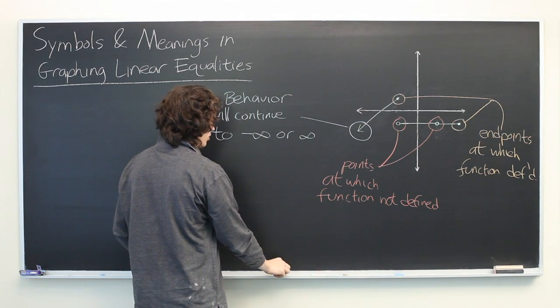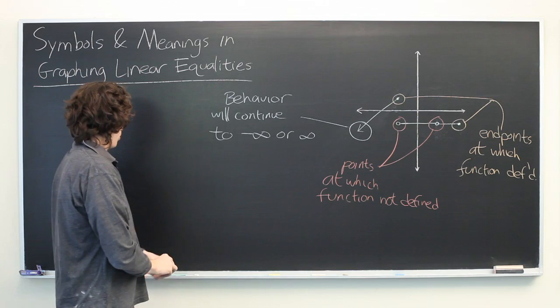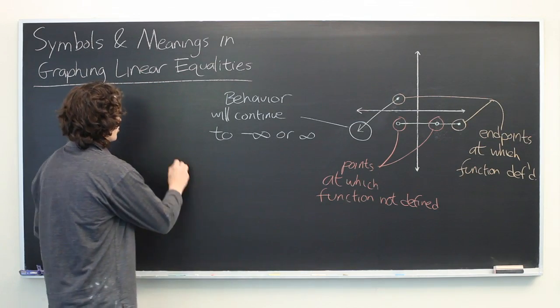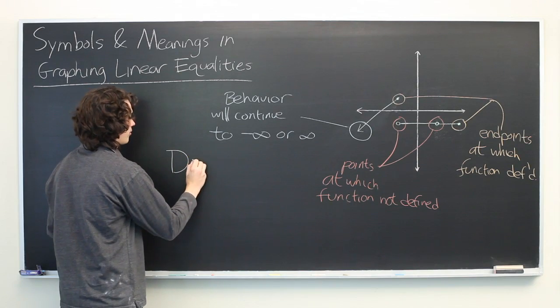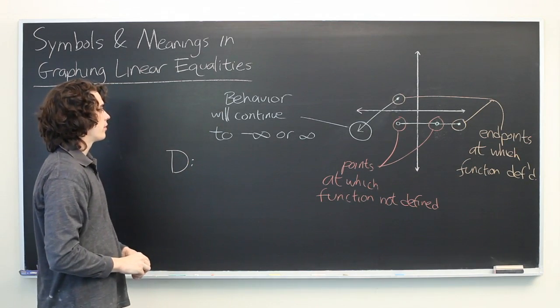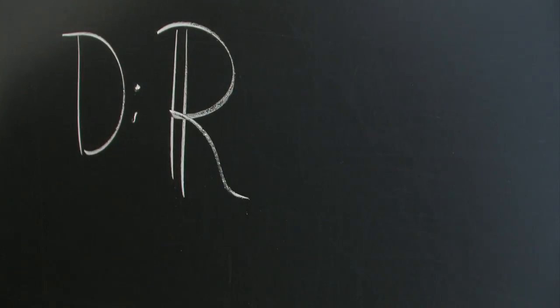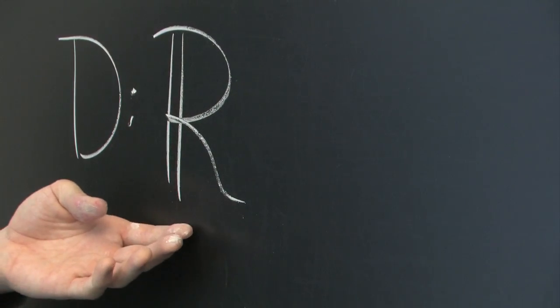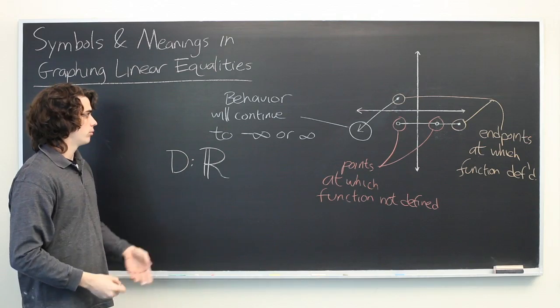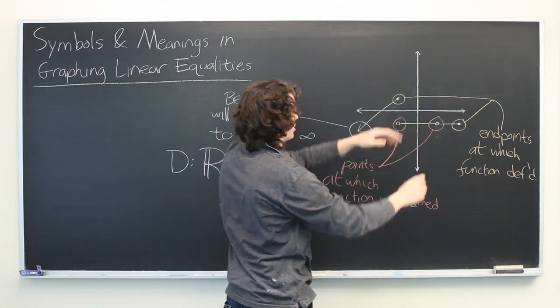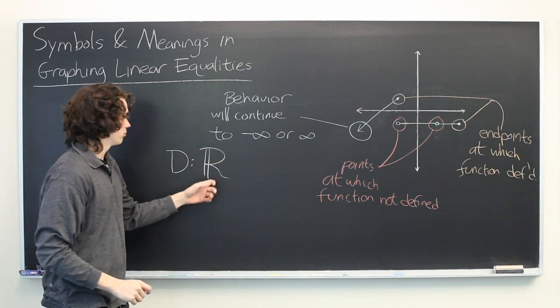So a few other pieces of notation that are used in the context of graphing linear equalities. When we're discussing the domain of a graph, you'll sometimes see this piece of notation. This is simply shorthand meaning all real numbers. So anything between negative infinity and positive infinity that is a real number is covered by this.